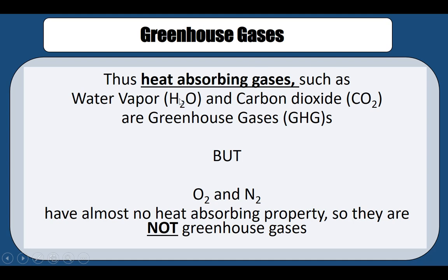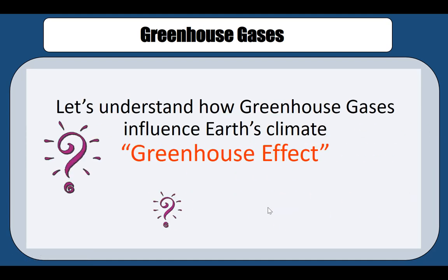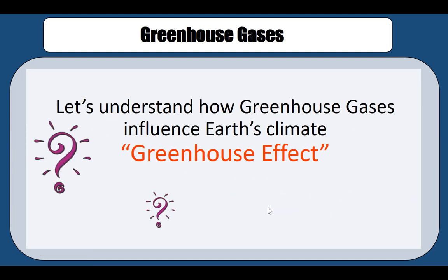So these are the dancing molecules whereas those are the watchers. Greenhouse gases are heat-absorbing gases; examples are water vapor and carbon dioxide. Oxygen and nitrogen, because they don't have heat-absorbing properties, are not greenhouse gases.